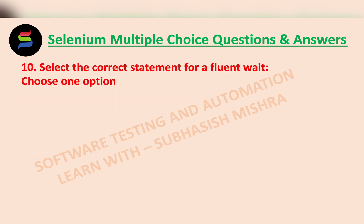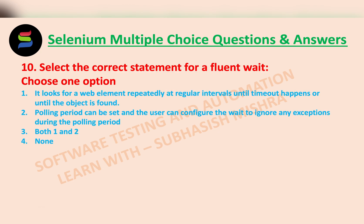Select the correct statement for a Fluent wait. Choose one option — we have four options. The answer is both 1 and 2: it looks for a web element repeatedly at regular intervals until timeout happens or until the object is found; the polling period can be set, and the user can configure the wait to ignore any exceptions during the polling period.